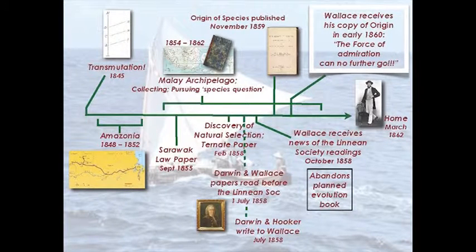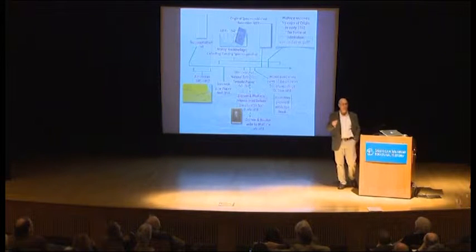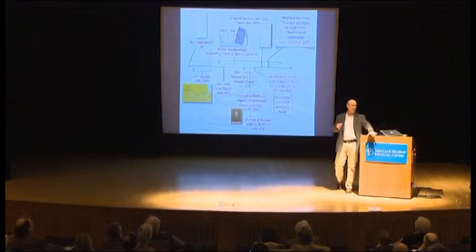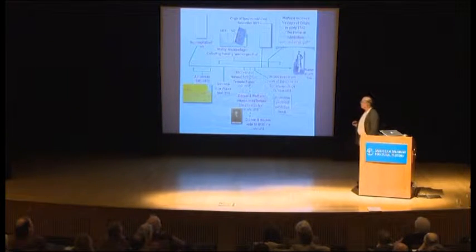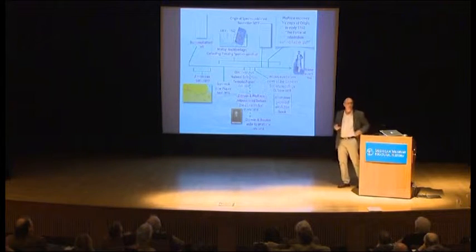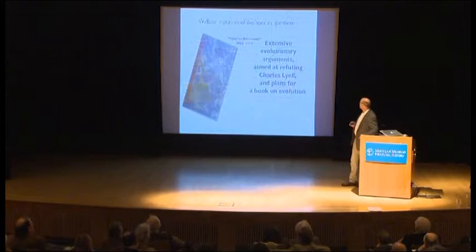Darwin's book came out in November 1859, and Darwin sent Wallace a copy. Wallace was still in the Malay Archipelago and didn't receive it until early 1860. His praise was genuine, warm, and effusive — 'the force of admiration can no further go.' He was happy at that point to relinquish his own book plans and get on to other things. He doesn't get home until March 1862, Birds of Paradise in tow, and is a made naturalist.